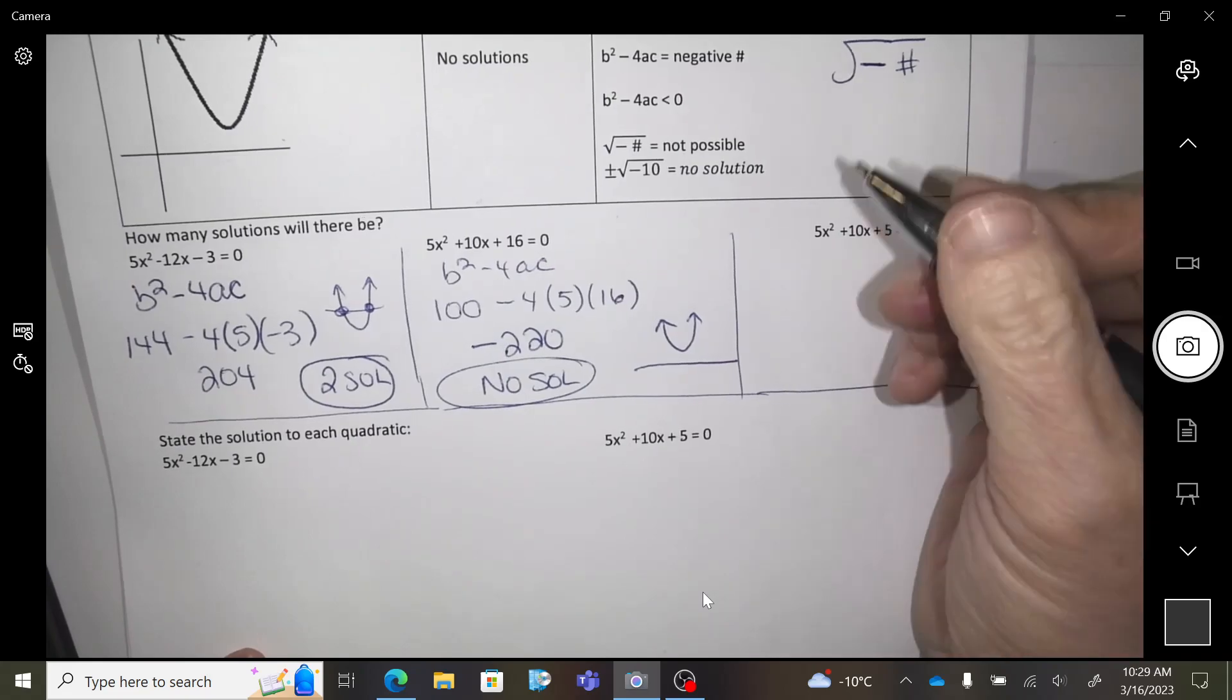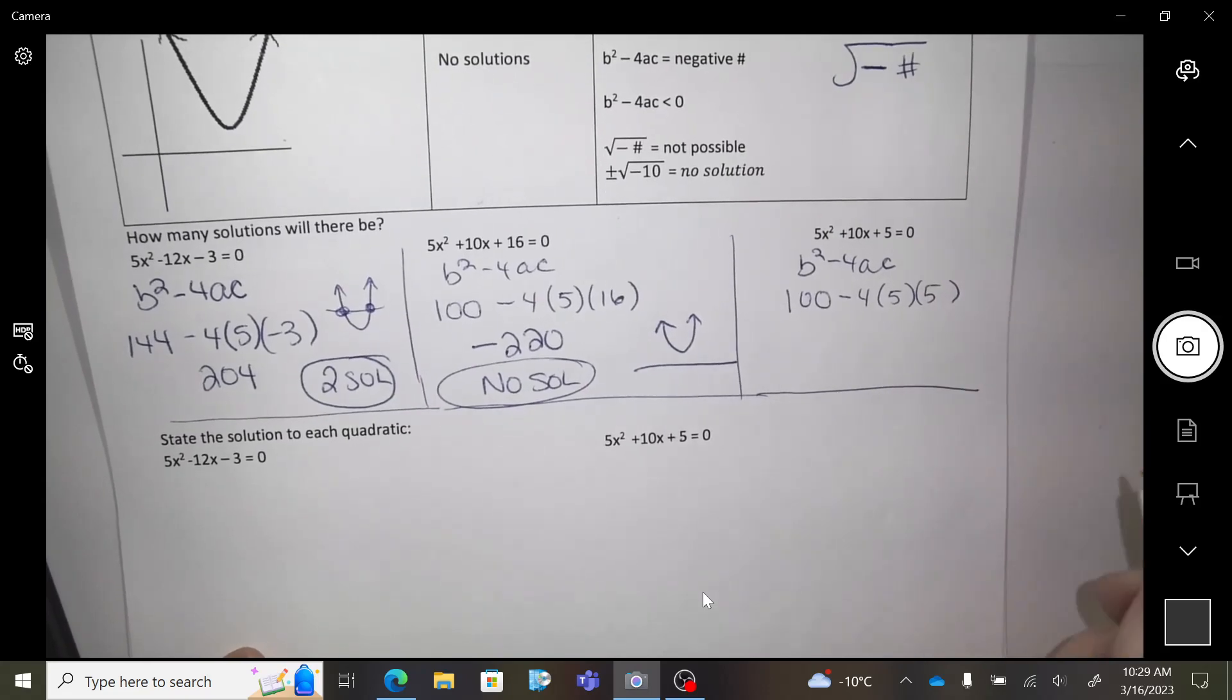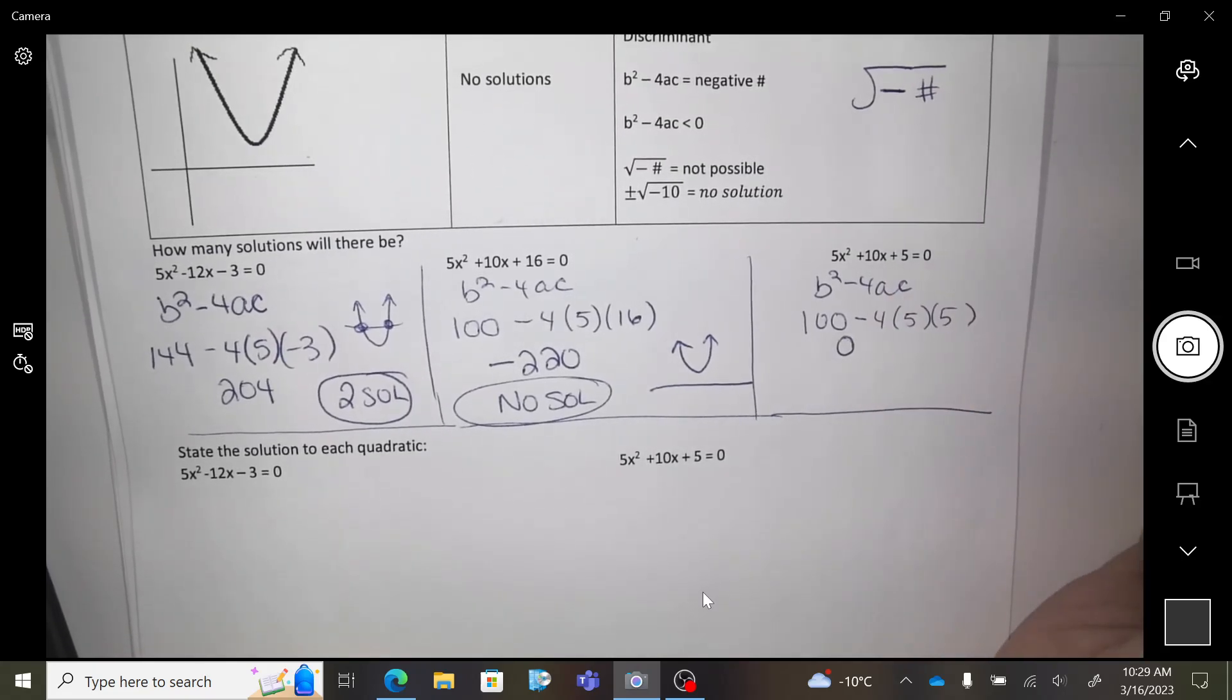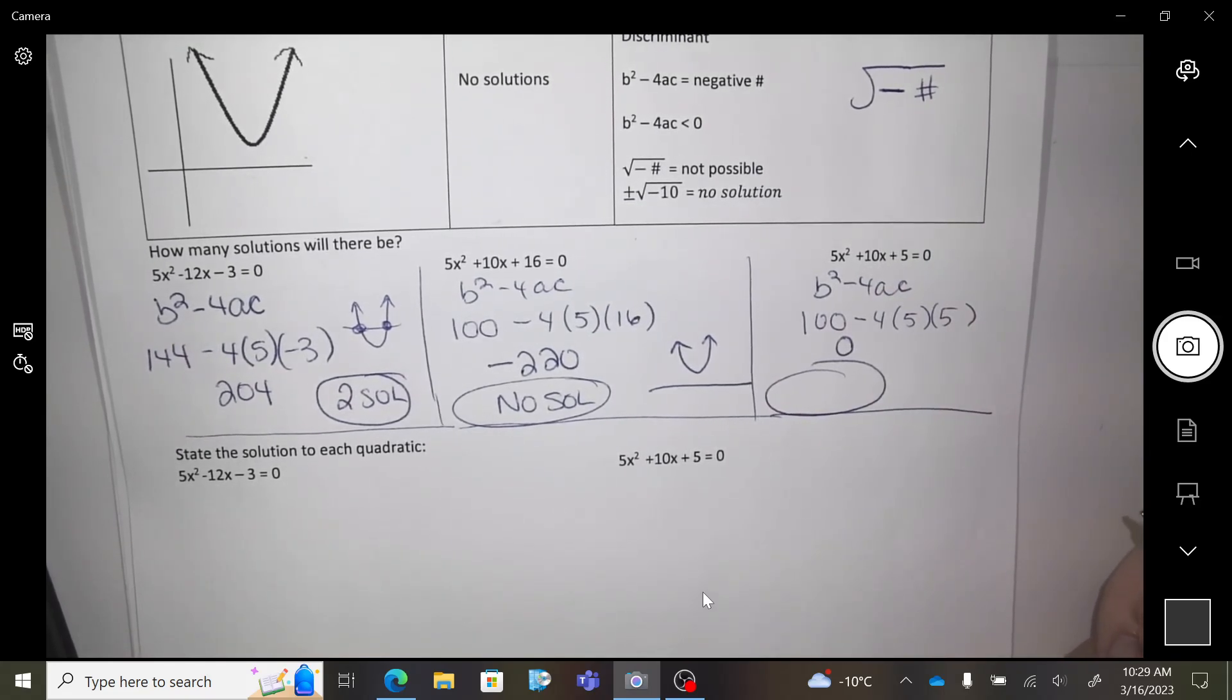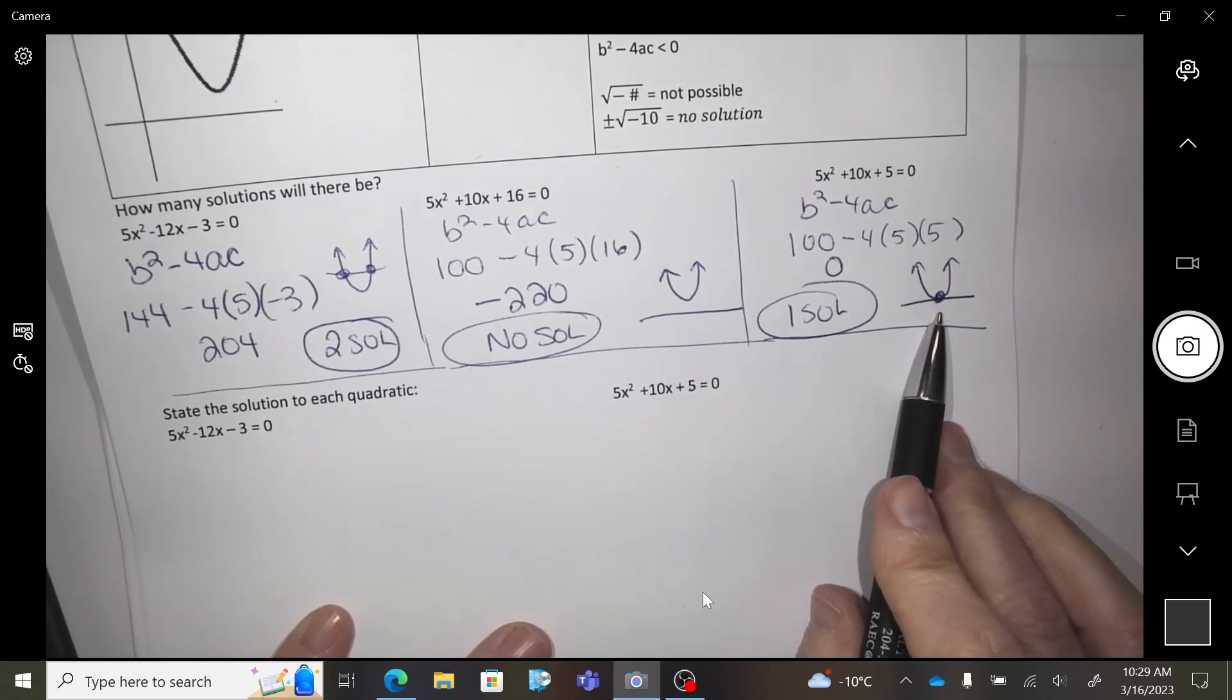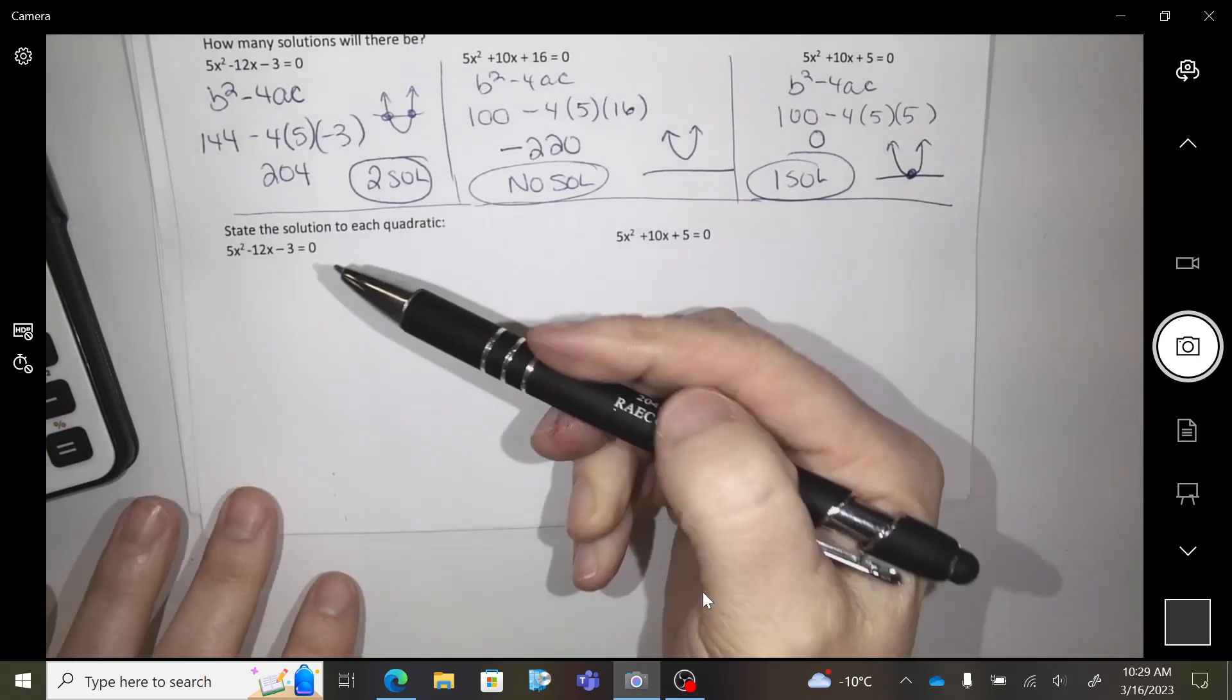And the last question, b squared minus 4ac, just that part. 100 minus 4, 5, 5. So that equals 0 in my calculator? So I would state how many x-intercepts will this parabola have? One. One. So visually, it will look like this. There will be one x-intercept exactly.